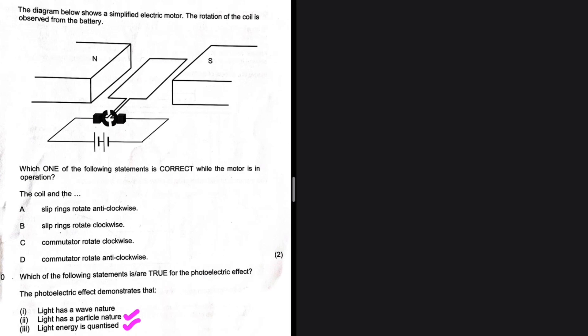Question 1.9: the diagram shows a simplified electric motor. The rotation of the coil is observed from the battery — that is key. Options A and B talk about slip rings, but looking at the sketch we clearly don't have slip rings; we have commutators. So A and B are already eliminated.